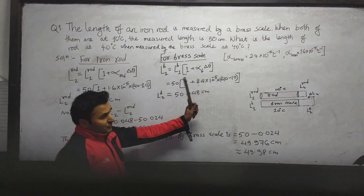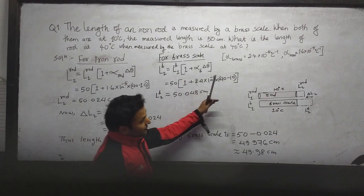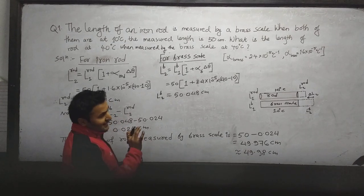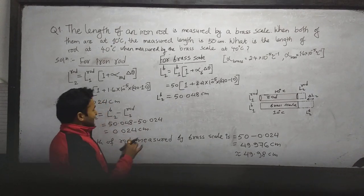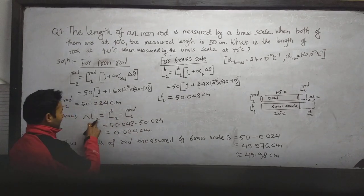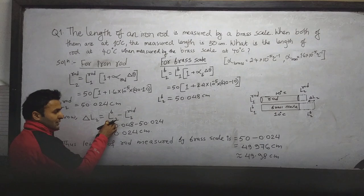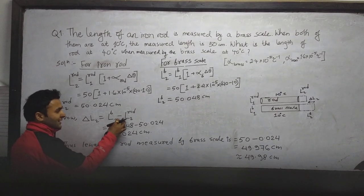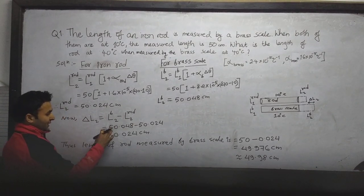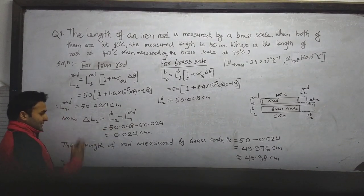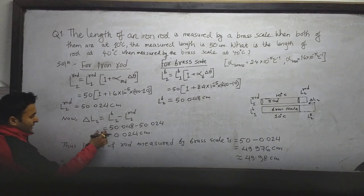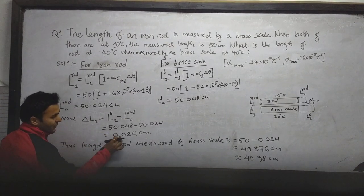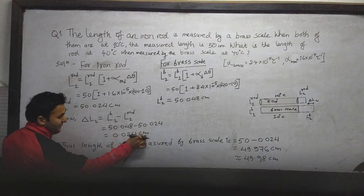Now we must find the changing length, that is ΔL2 = L2_brass minus L2_rod. By calculating, we get ΔL2 = 0.024 cm.